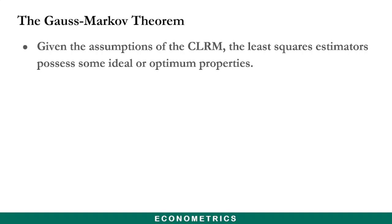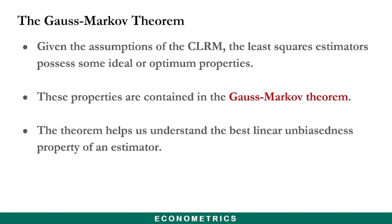Given the assumptions of the classical linear regression model, the least squares estimators possess some ideal or optimal properties. These properties are contained in the Gauss-Markov theorem. This theorem helps us understand the best linear unbiasedness property of an estimator.